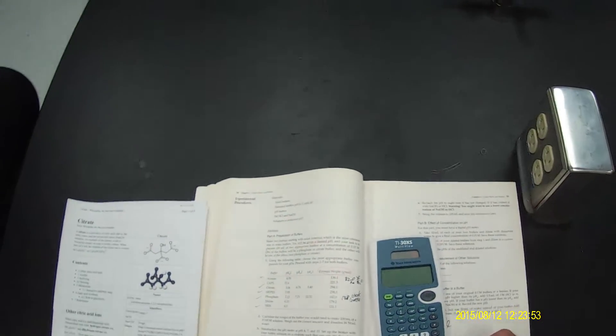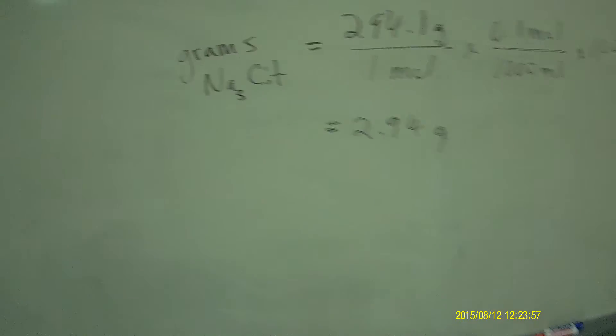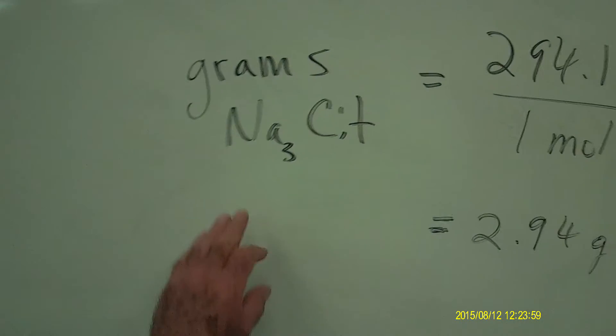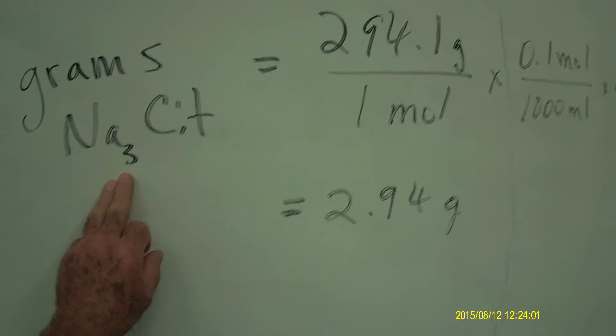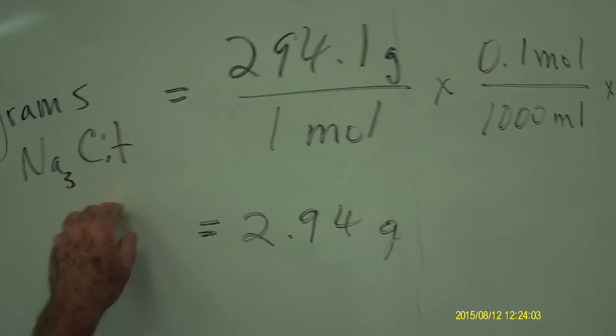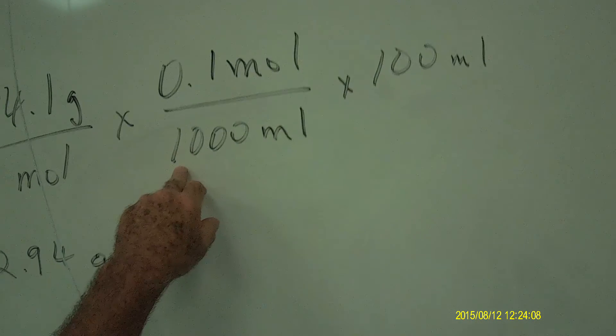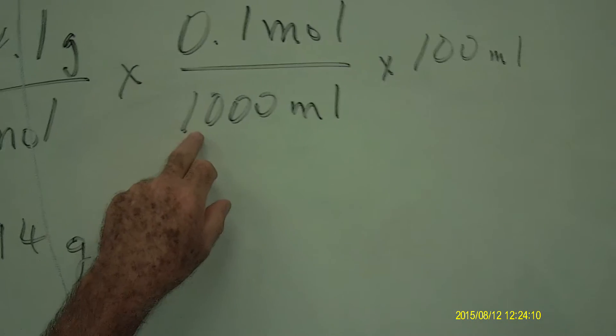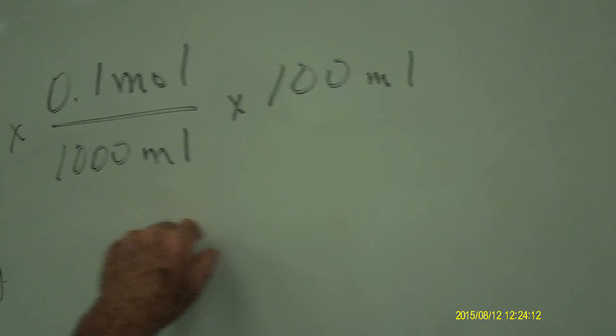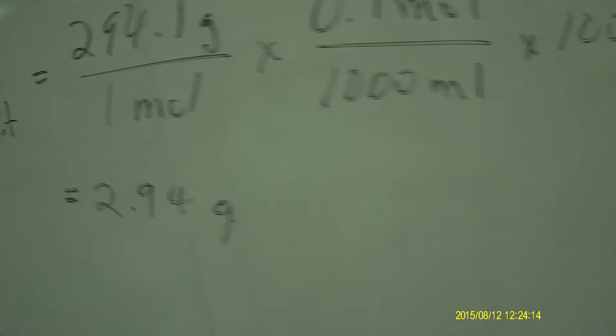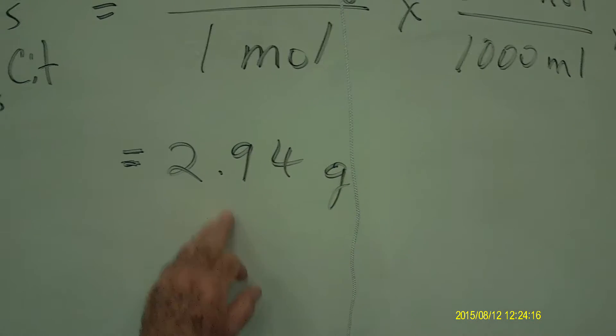And to calculate how much sodium citrate we would need to prepare our solution, we can come over here to the board and calculate grams of trisodium citrate. It has water in it, but the molecular weight is 294.1 grams per mole, and we're making a 0.1 mole per liter, or 0.1 over 1,000 milliliter solution, and we need 100 mils of it. So if we multiply, we get 2.94 grams of sodium citrate are required.